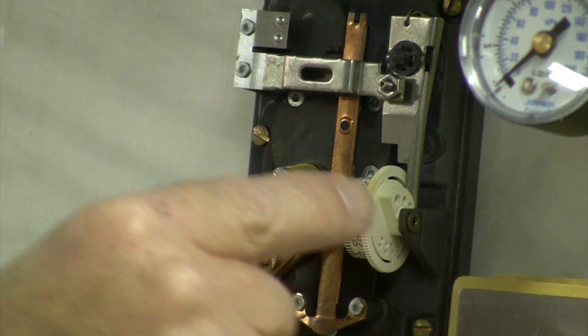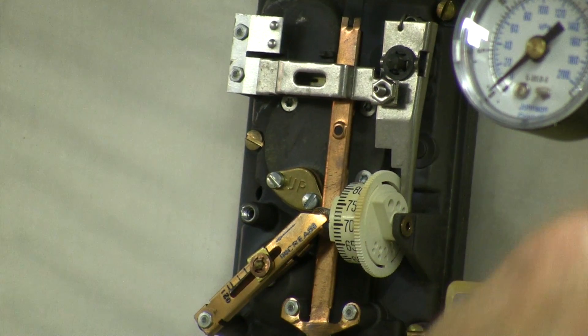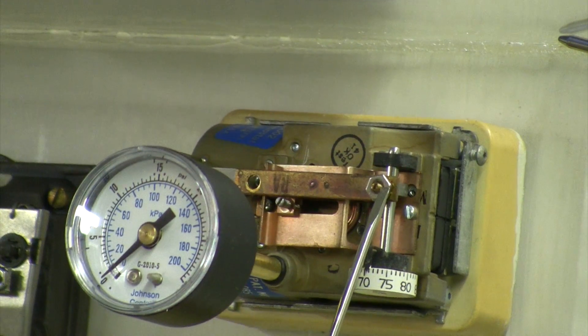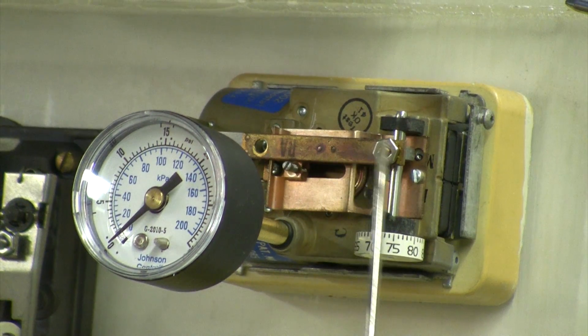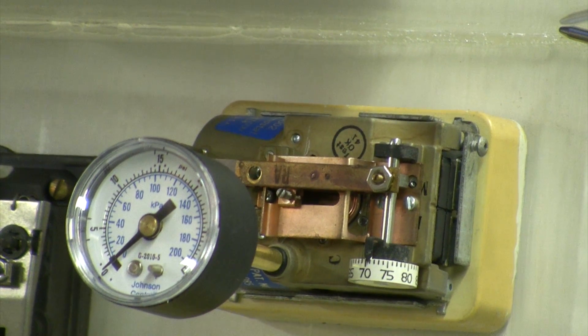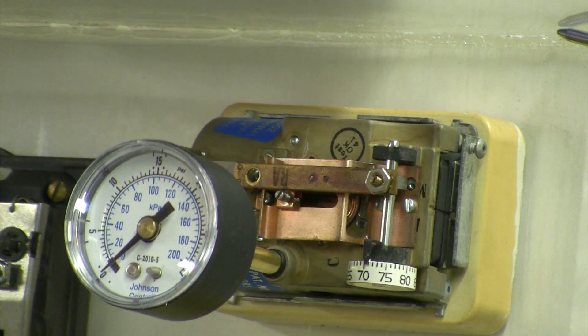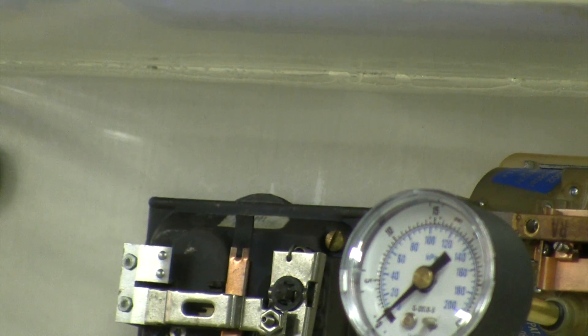For the Johnson Controls, it has a similar look to it, and that adjustment screw is right here at the end of the bi-metal assembly. And then when you look at the Robert Shaw...